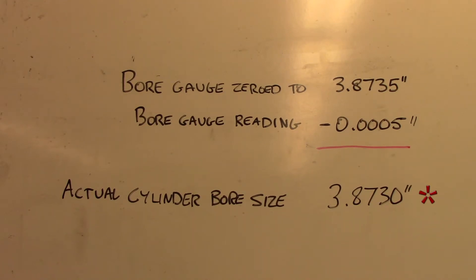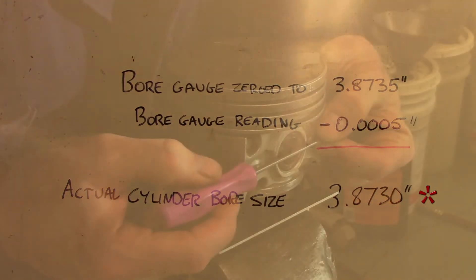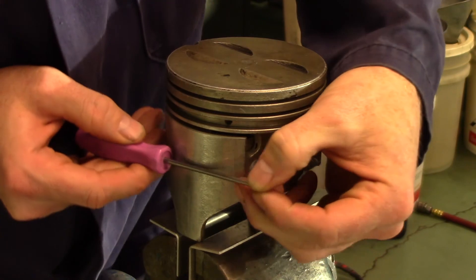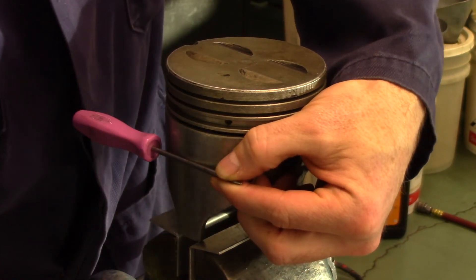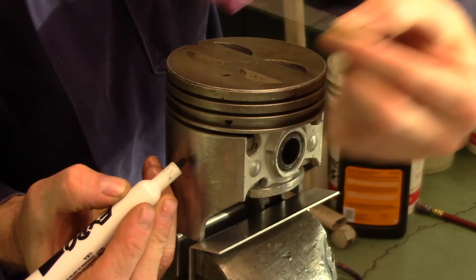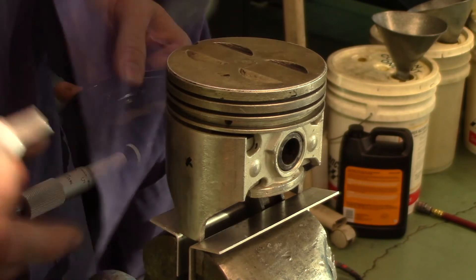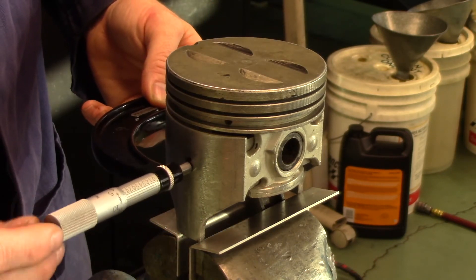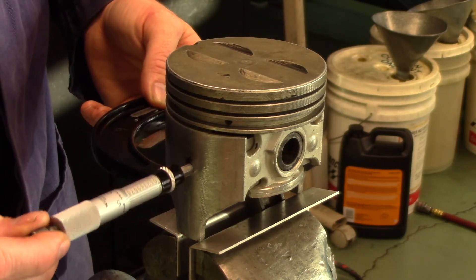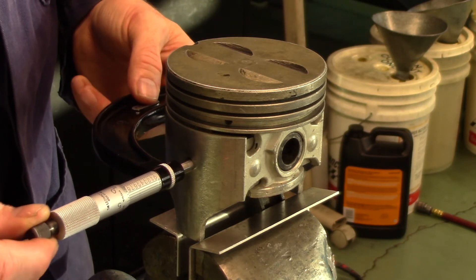Now we must measure the piston size. In this example, the manufacturer says to measure the piston at the same height as the centerline of the piston pin along the major and minor thrust side. Our reading was 3.8705 inches.